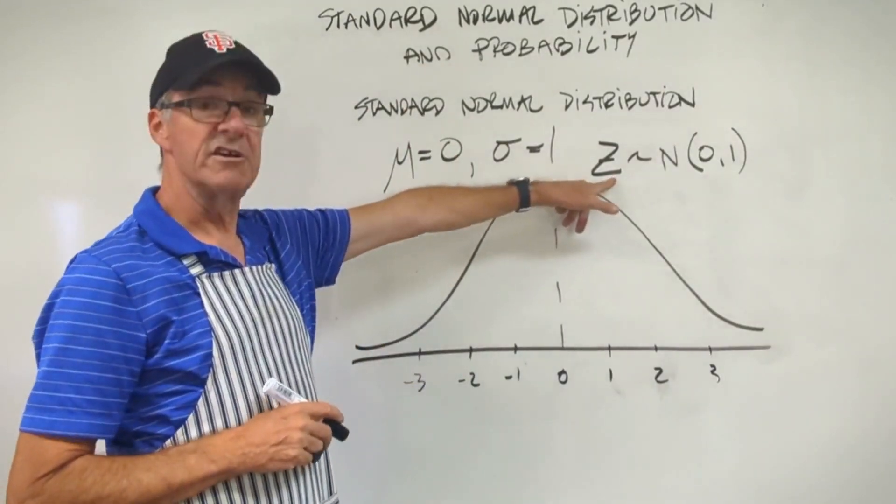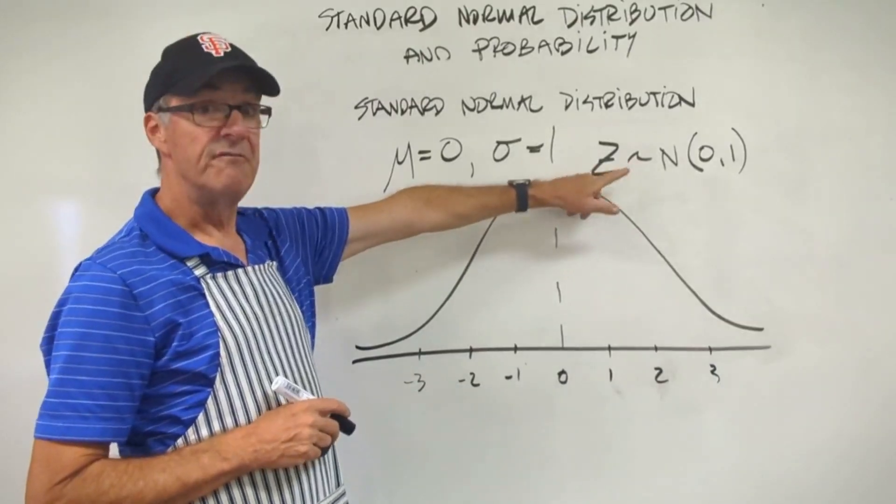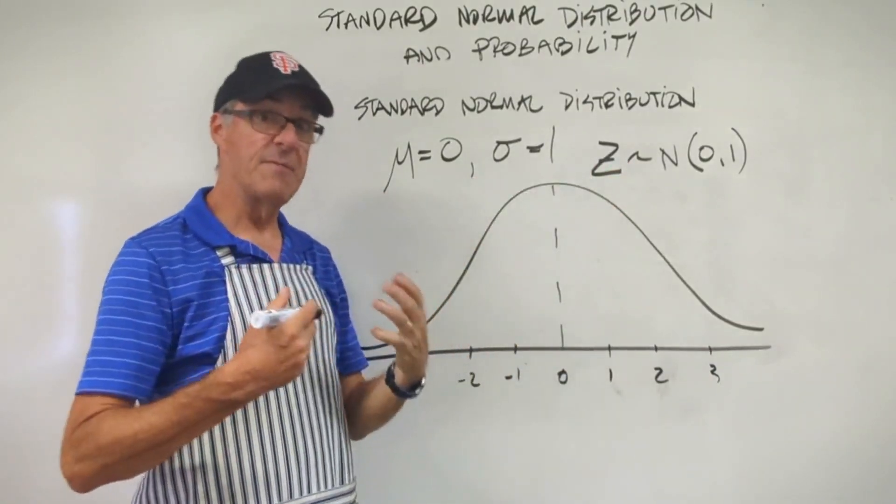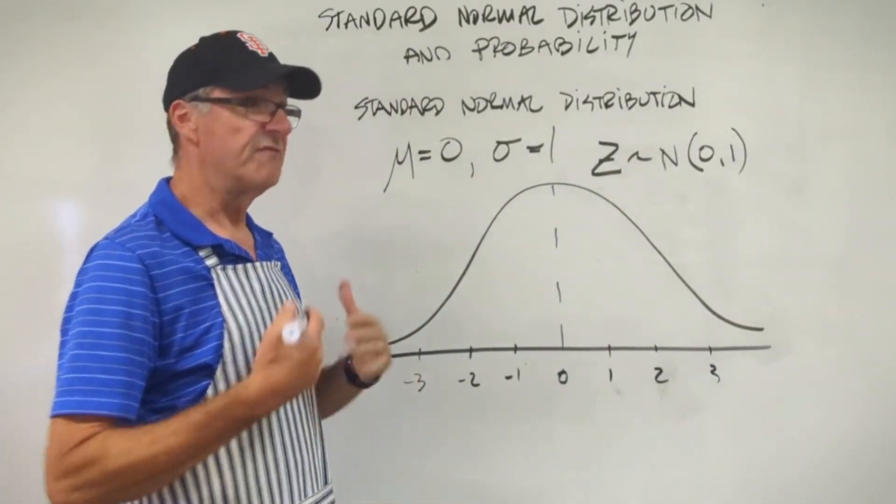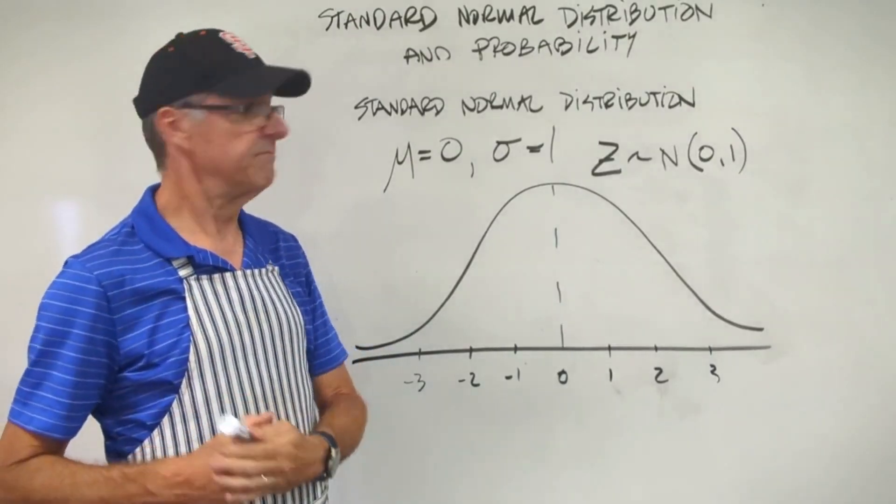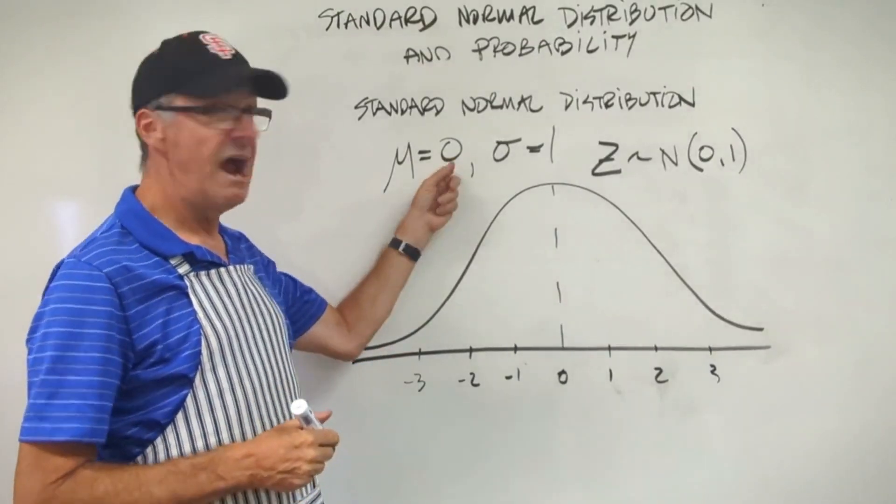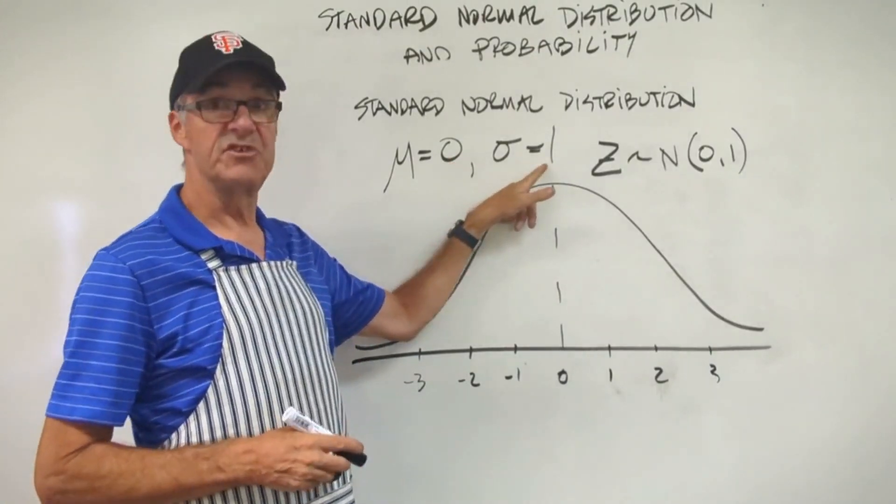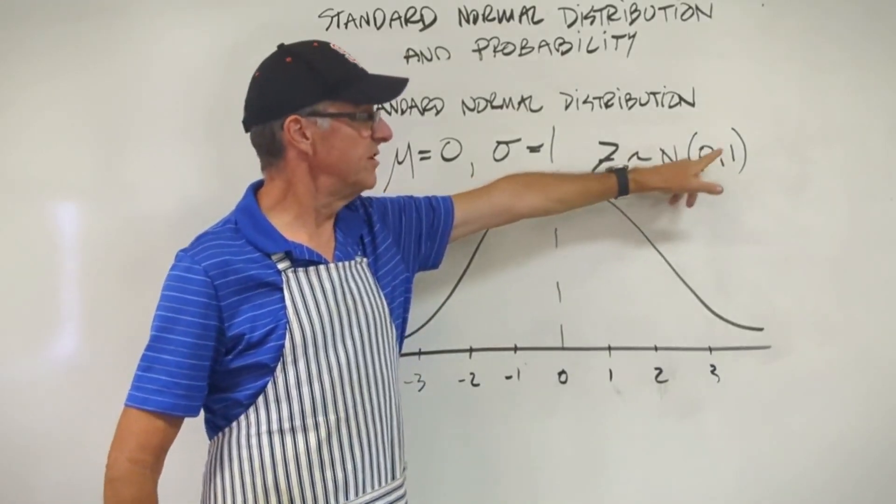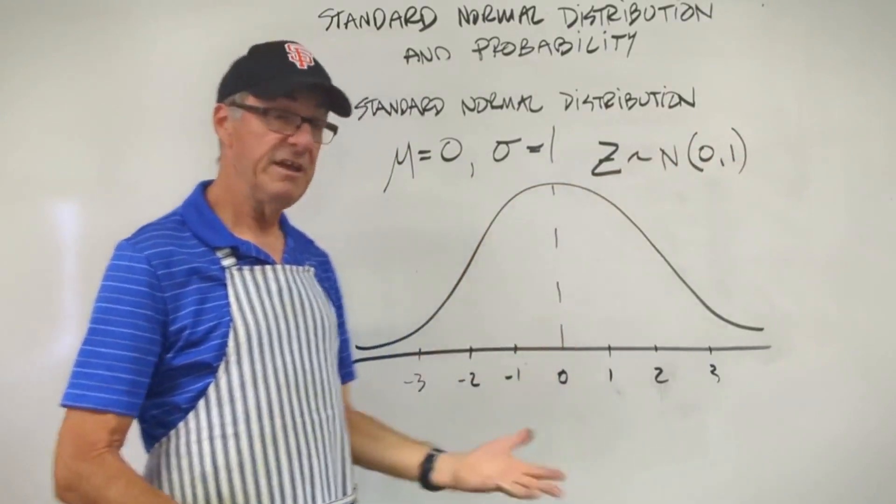So our notation is a little different. Now we use the letter Z. So random variable with the letter Z means that that variable, when you're looking at the probabilities, it falls in a standard normal distribution. So that allows you to say average is zero, standard deviation is one. And so what we write is Z to the normal distribution, zero, one. Like that. Okay?